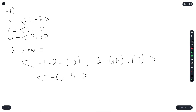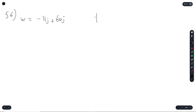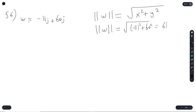Question 56 asks for a unit vector. A unit vector is a vector where the magnitude equals 1. The magnitude formula is the radical of x squared plus y squared. For vector w with components (negative 11, 60), the magnitude equals the radical of (negative 11 squared plus 60 squared), which gives 61.